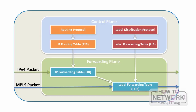MPLS separates the control plane from the data plane, which leads to great efficiency in how the LSR routers work. Resources constructed for efficient control plane operations include the routing protocol, the routing table, and the exchange of labels, and these are completely separated from resources that are designed only to forward traffic in the data plane as quickly as possible.